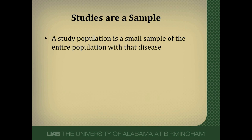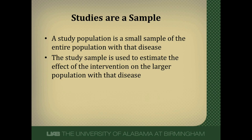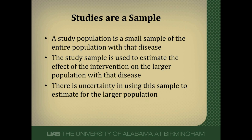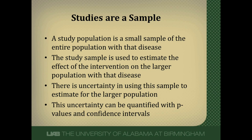A study population is just a very small sample of the entire population that has a disease that we're interested in. This study sample is then used to estimate the effect of the intervention on the larger population with that disease. There's uncertainty in using this small sample to estimate a much larger population, and this uncertainty can be quantified with p-values and confidence intervals.